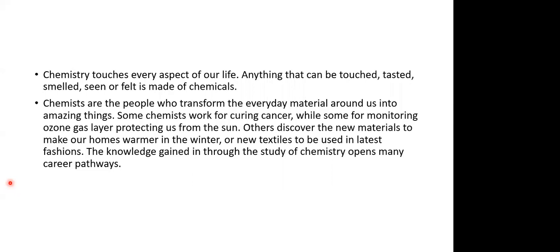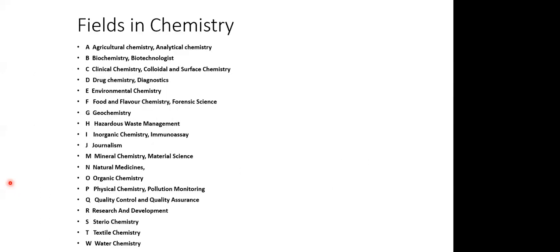So let us look at the fields in chemistry which we can talk about. I have listed them alphabetically, and you will find that for almost every alphabet there is something related to chemistry. Chemistry is there in every area and every field, and you have lots of scope because of that. We come to the question of a career. There is a difference between a job and a career. A job is a current position of a person — if you get a job, that doesn't mean you have started your career.